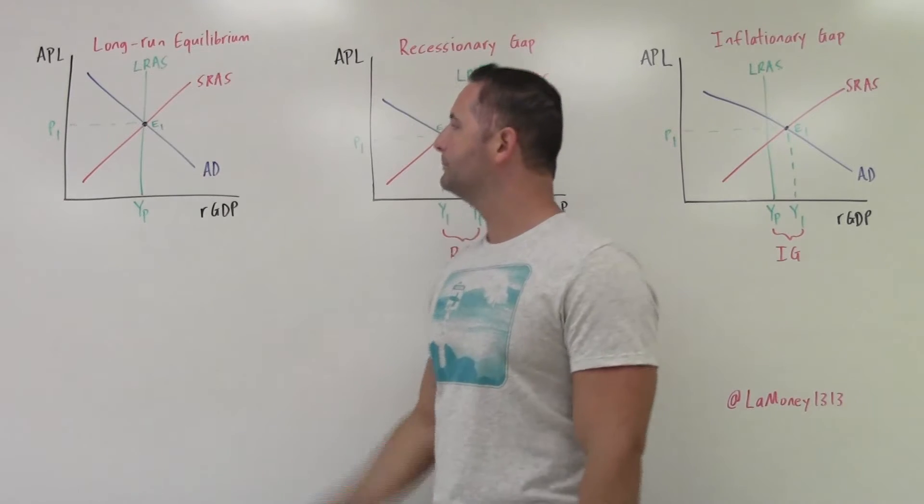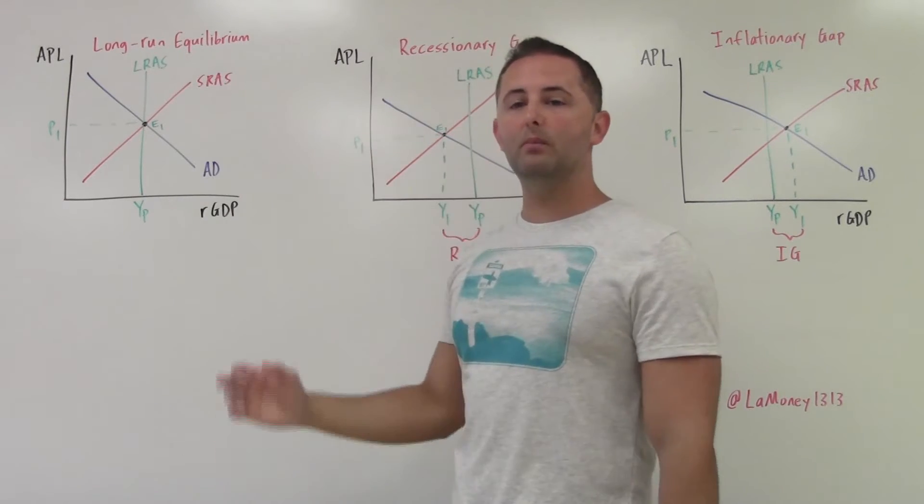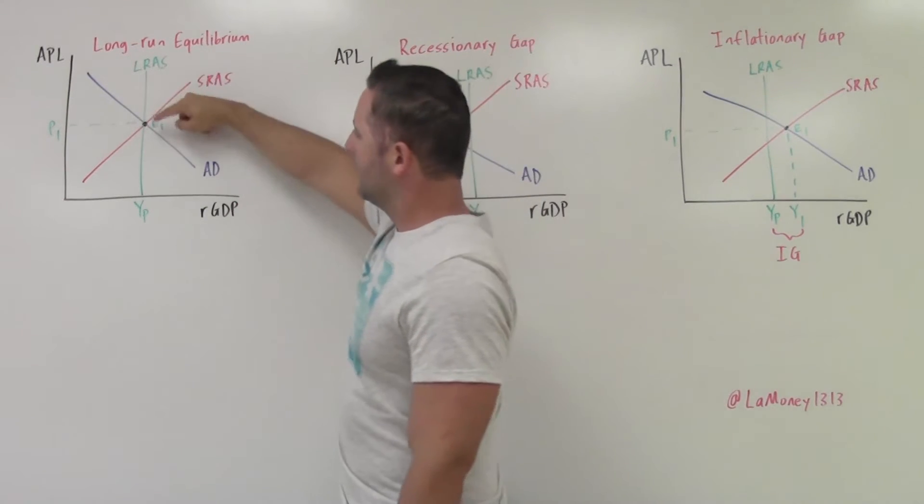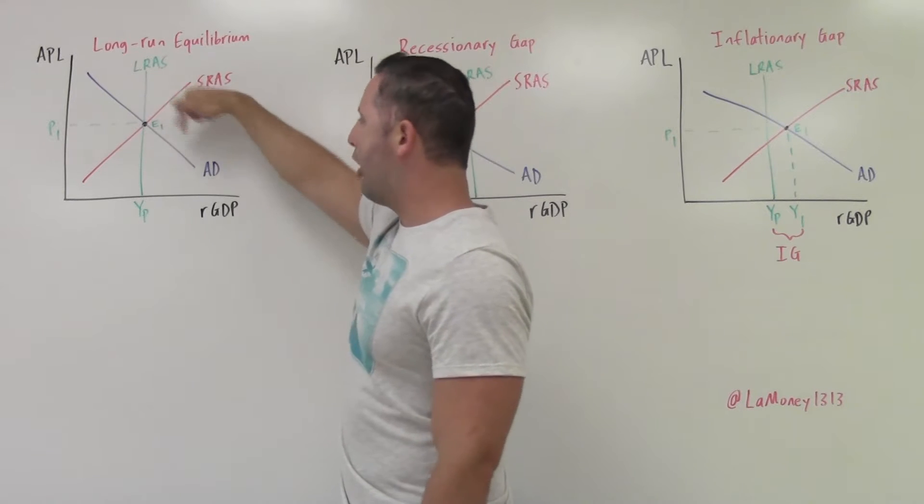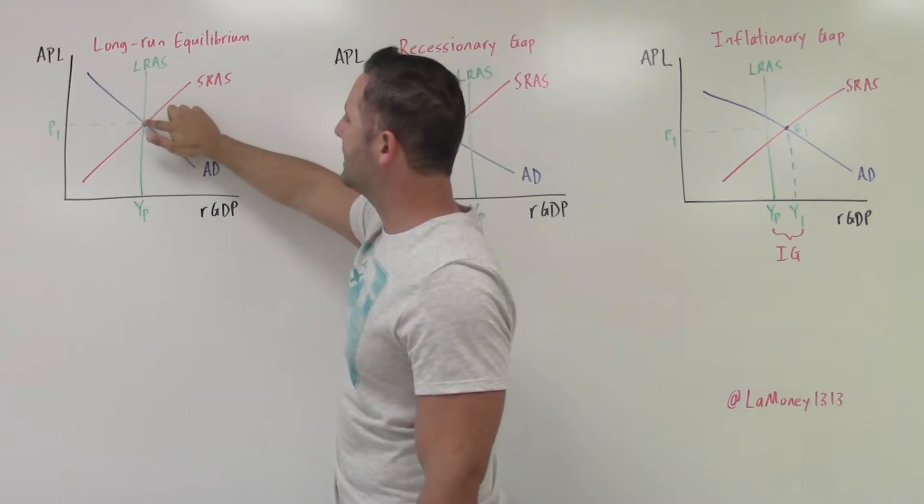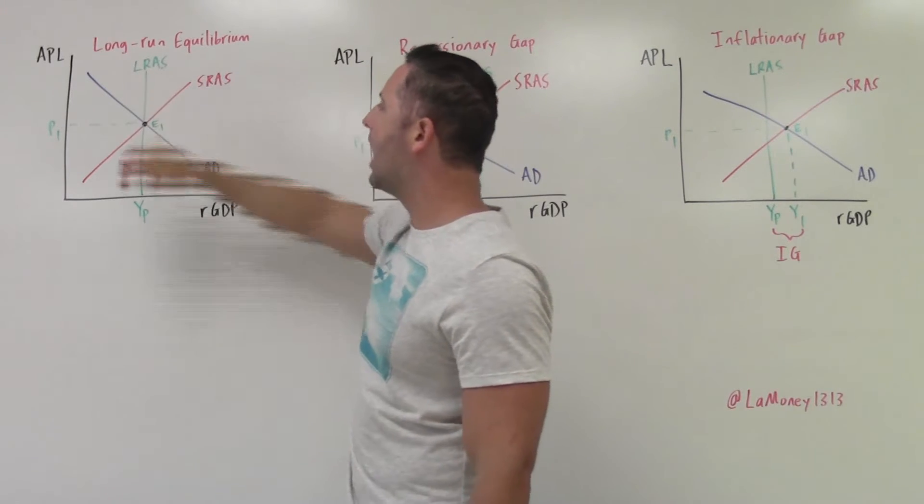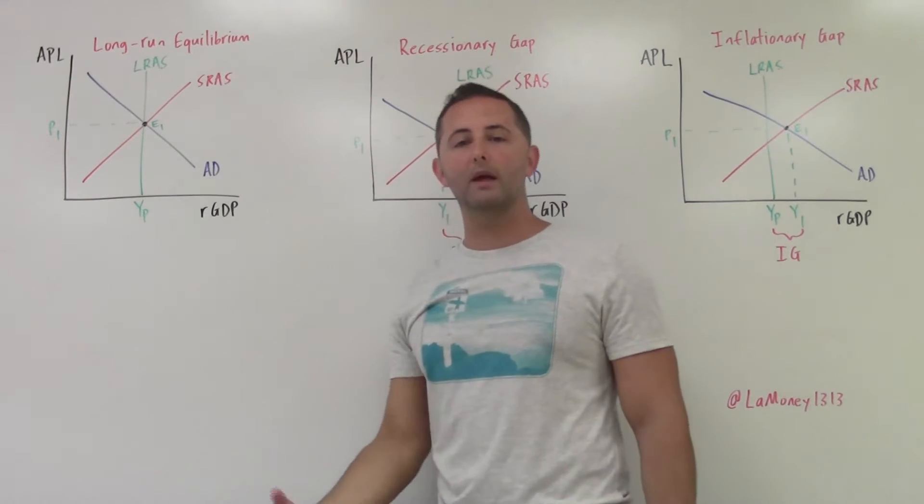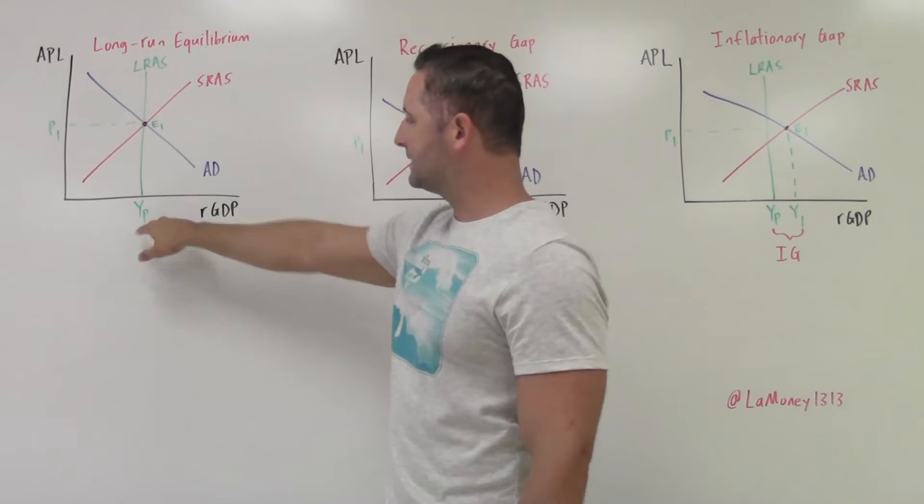So let's start with the basic one. Let's start with long-run equilibrium. So as you see, this one is the most basic one because equilibrium is where all three curves meet. We have aggregate supply, aggregate demand, and they are crossing, intersecting on our long-run aggregate supply curve.